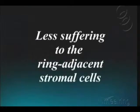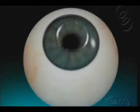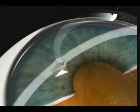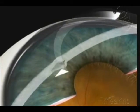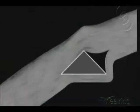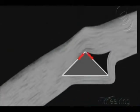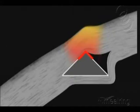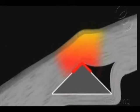Less suffering to the ring adjacent stromal cells. The old triangular cross section models have a sharp apex that concentrates pressure in the superior adjacent area. In this region, the metabolism is disturbed by excessive compression and cells begin to suffer.